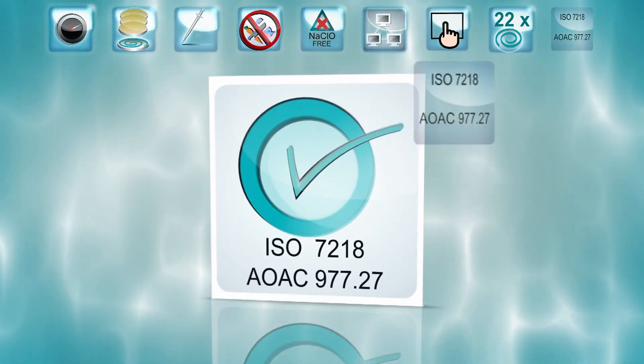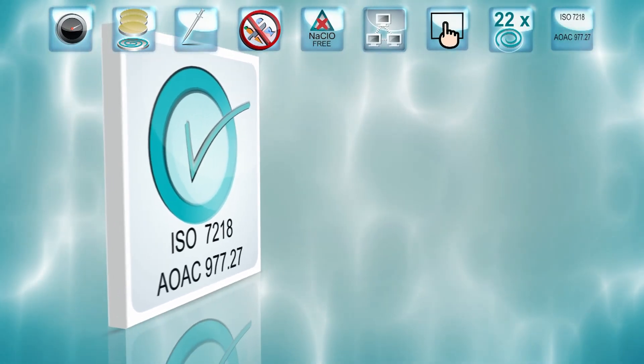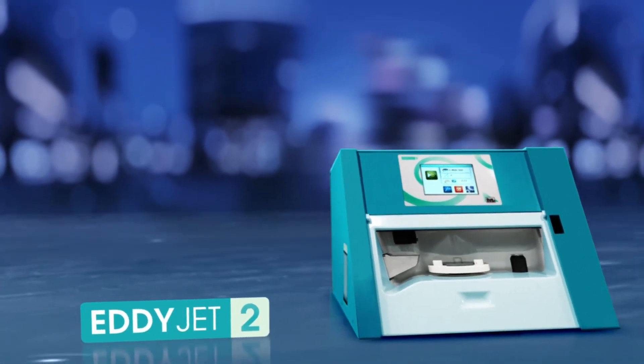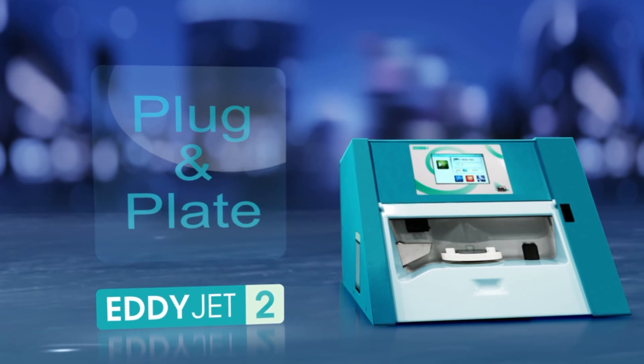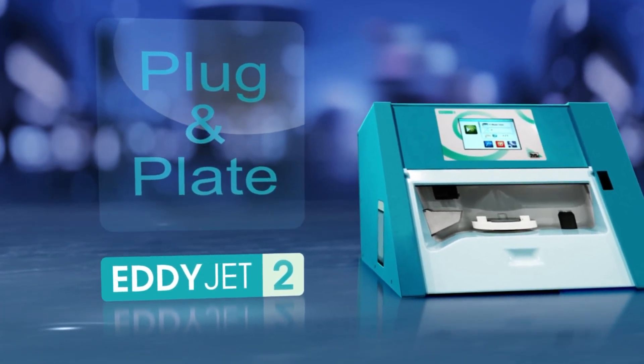Spiral plating is an ISO and AOAC validated microbiological method. A streamlined workflow, user-friendliness, and speed make EDIJED2 the most productive spiral plater.